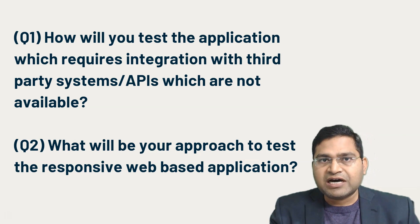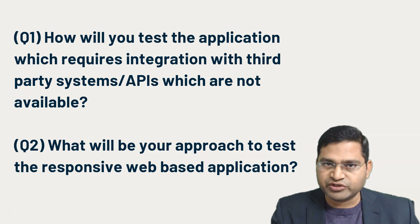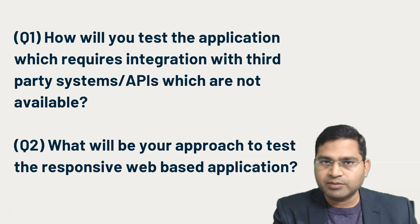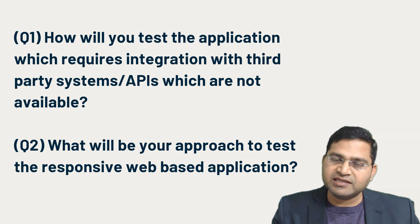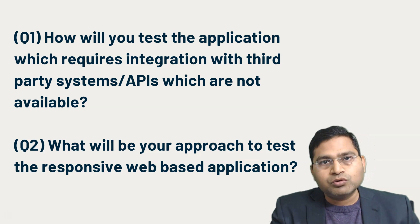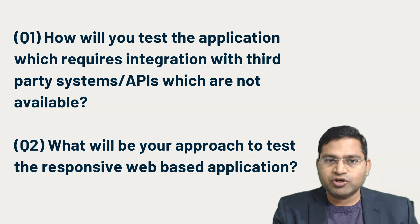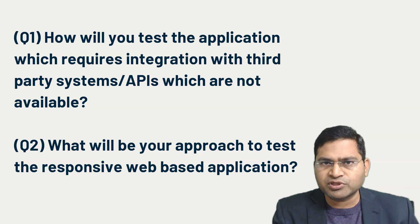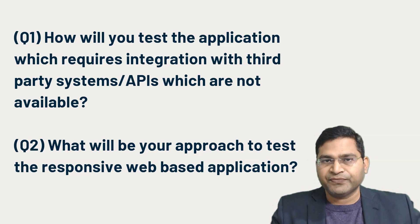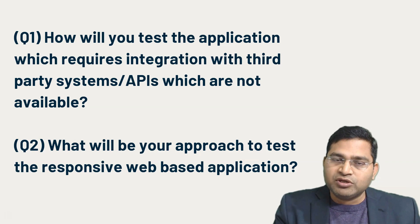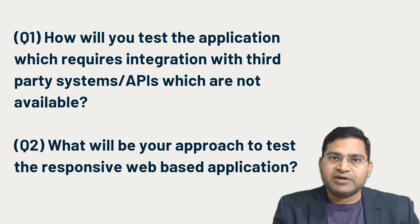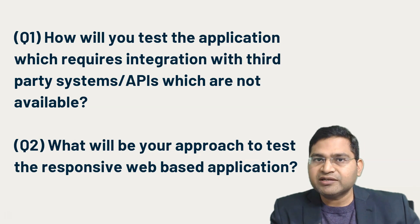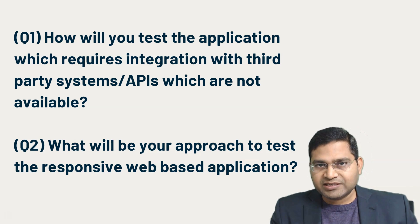The baseline when creating stubs is the documentation that third-party systems provide. There will always be documentation covering what APIs are exposed, what attributes they carry, and what different scenarios — error responses, success responses, etc. — are covered. You ensure your stubs cover those scenarios per the documentation, and you test the application against those responses. Swagger documentation is one example that helps you understand what APIs are exposed.